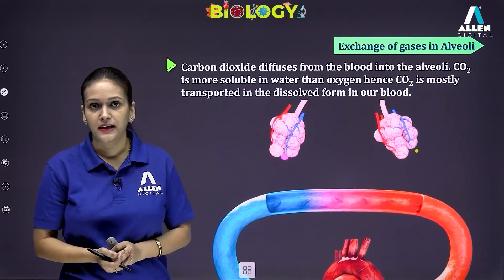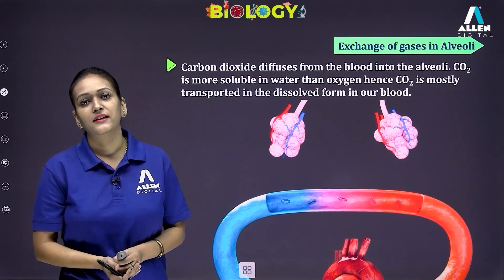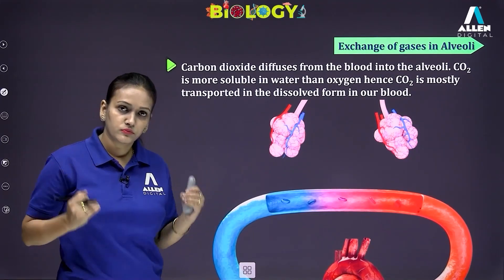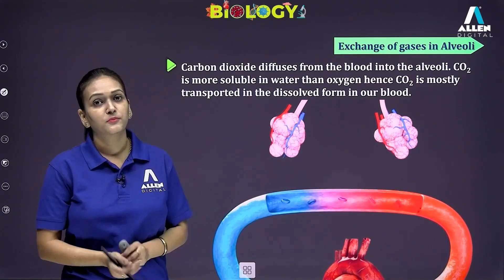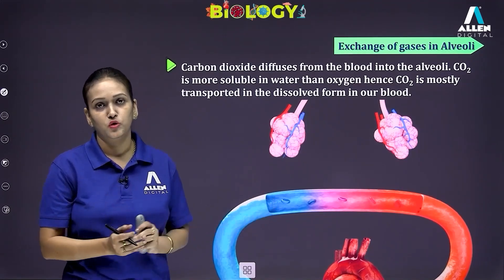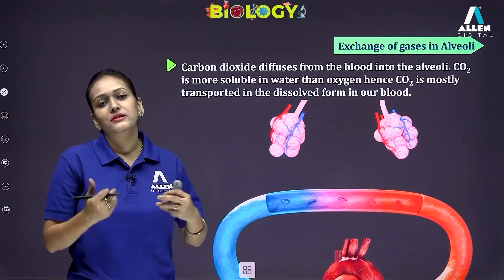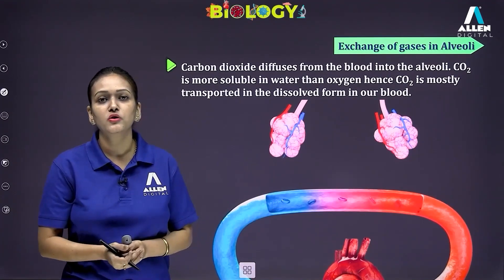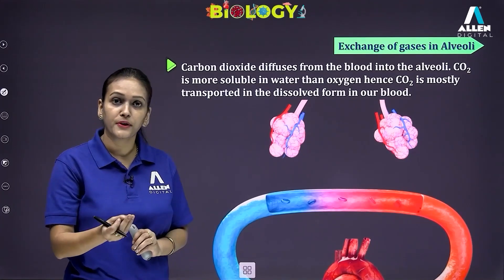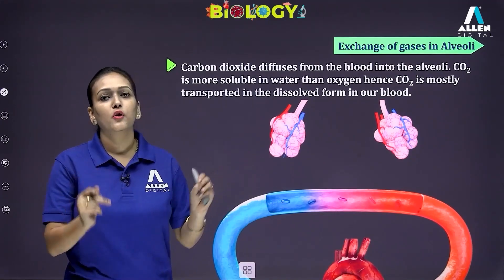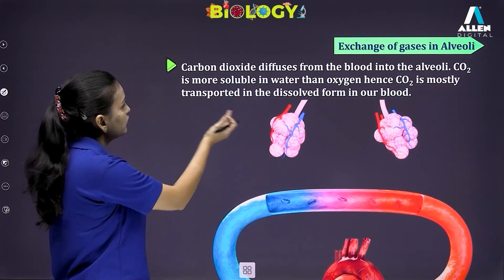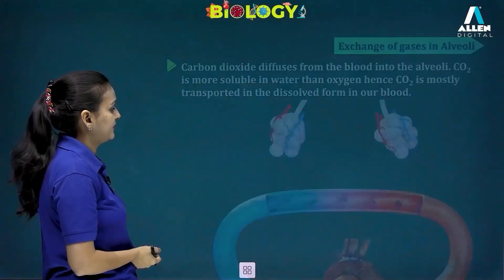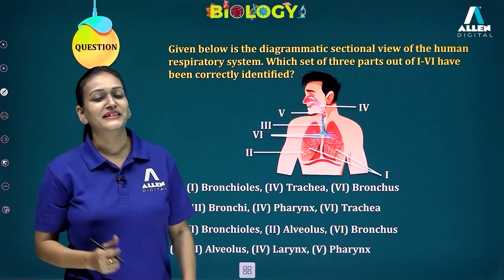Something very important: the solubility of carbon dioxide gas in water is much more than the solubility of oxygen gas in water. Blood plasma is chiefly composed of water, so CO2 is transported mainly dissolved in plasma, whereas oxygen is mainly transported in the form of oxyhemoglobin. Some oxygen is also transported dissolved in plasma, and some CO2 is transported by hemoglobin too, but CO2 is transported mainly in dissolved form because it is well soluble in water.